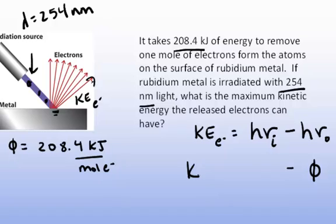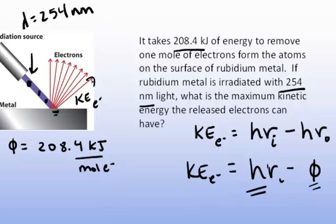We're trying to calculate the kinetic energy of the electrons, and we're given the incident radiation so we can calculate the energy. We're given the work function energy so that we can then calculate the kinetic energy. Let's calculate the energy of the incident radiation right now.